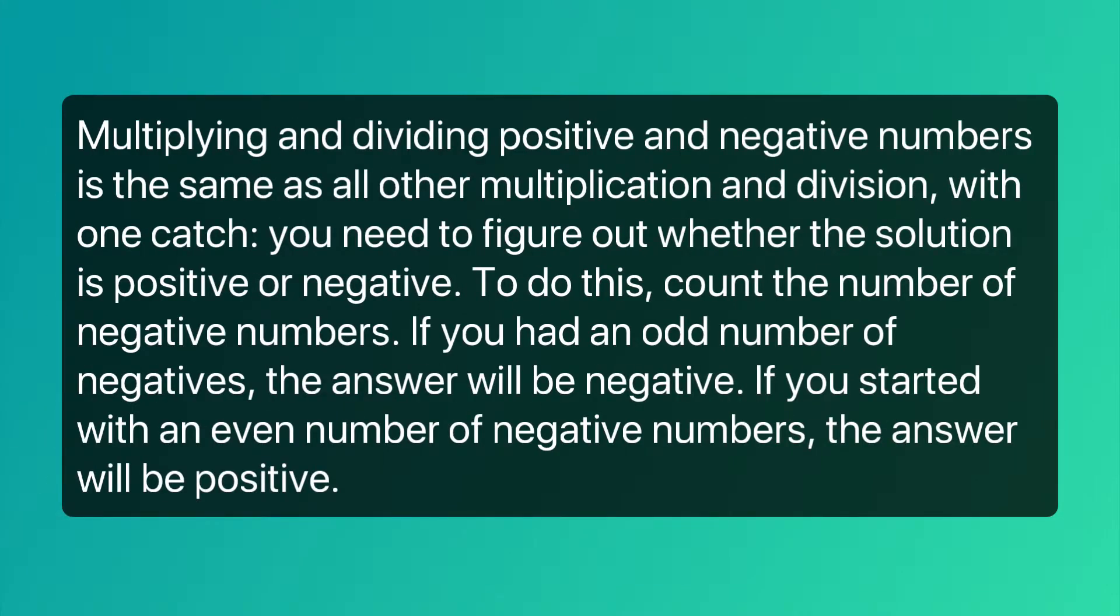Multiplying and dividing positive and negative numbers is the same as all other multiplication and division, with one catch. You need to figure out whether the solution is positive or negative. To do this, count the number of negative numbers. If you had an odd number of negatives, the answer will be negative. If you started out with an even number of negative numbers, the answer will be positive.